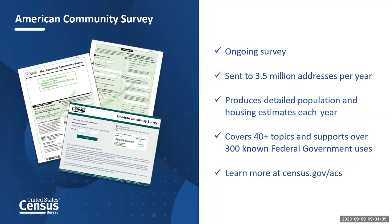The American Community Survey is an ongoing survey which sends out mailings to approximately 3.5 million addresses annually, or about 295,000 addresses each month. The ACS collects and produces detailed population and housing estimates as well as social, economic, housing, and demographic characteristics. It covers over 40 topics that support many federal government uses.